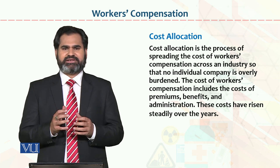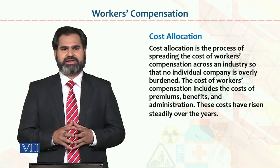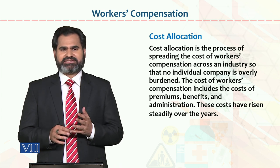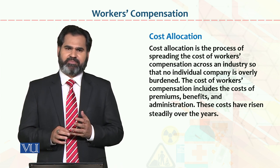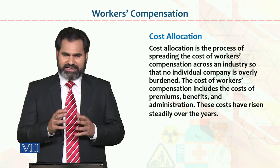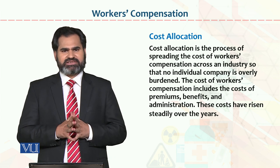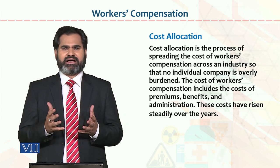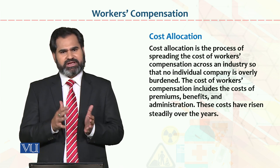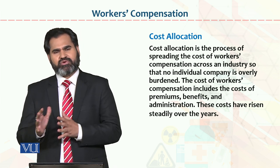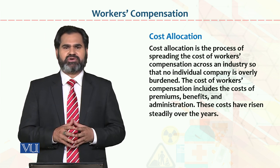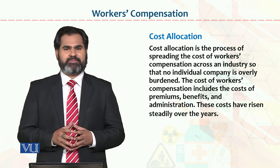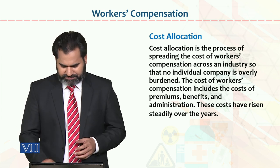With five textile companies in the industry, if one worker needs to be compensated, say 10 lakh rupees, that cost is divided among all five companies. Each company pays its share, so no single company is overly burdened. This is one of the best methods of cost allocation.